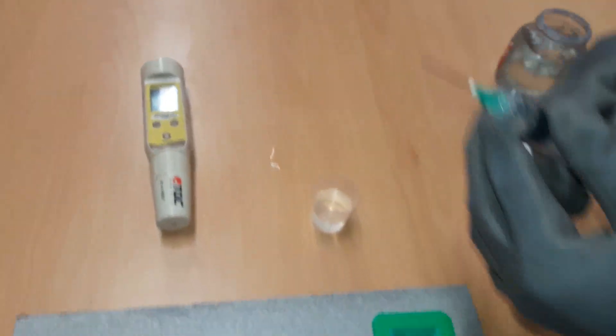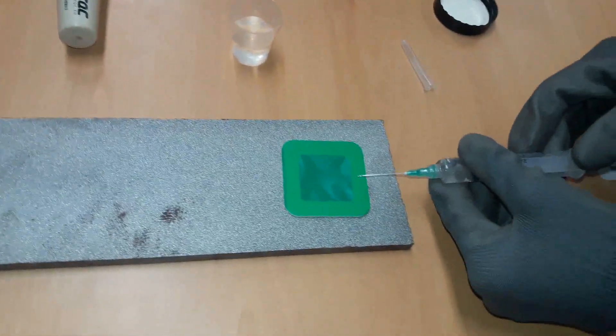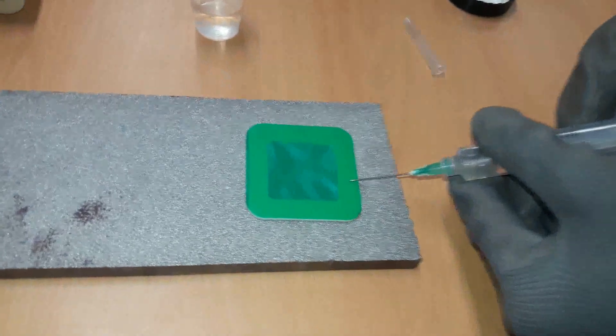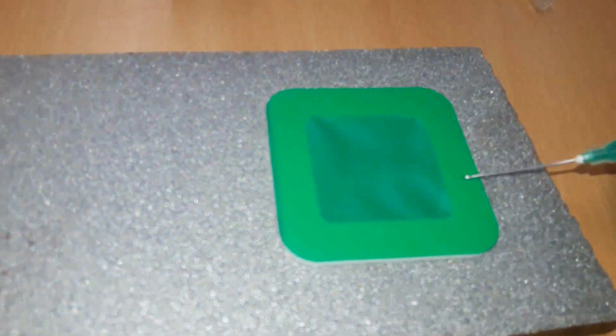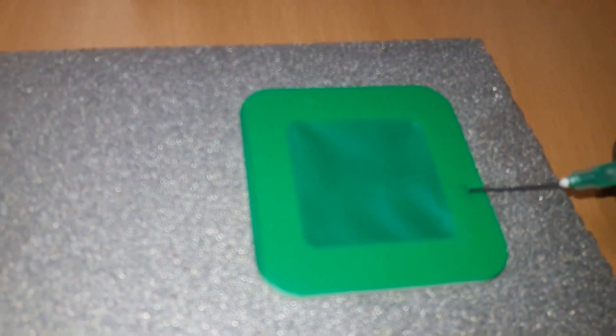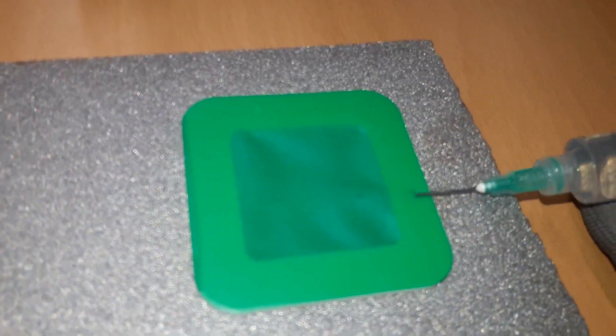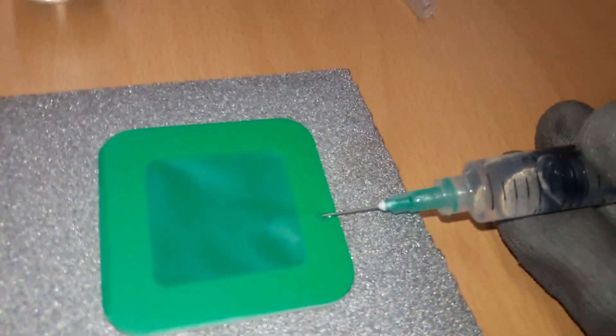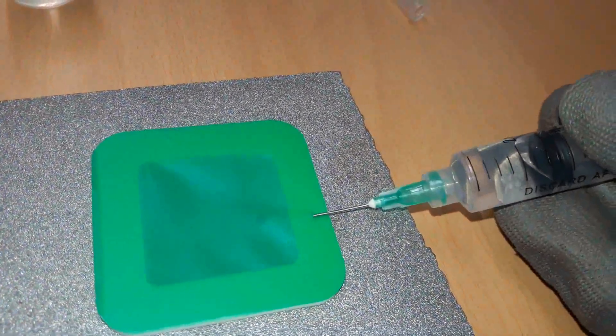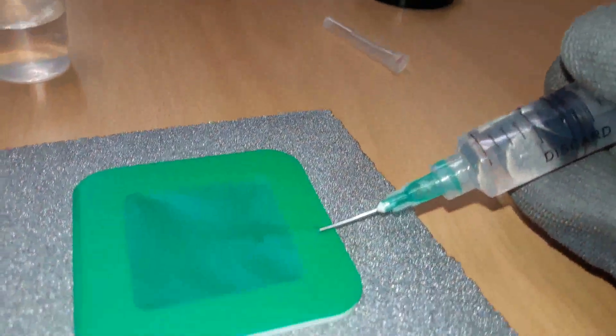Insert the syringe needle at an angle of 30 degrees to the test surface near the outer edge of the patch, so that it passes through the adhesive foam body of the patch into the compartment formed between the elastomer film and the test surface. If the patch is in a position which makes access to the patch compartment difficult, bend the syringe needle as required.